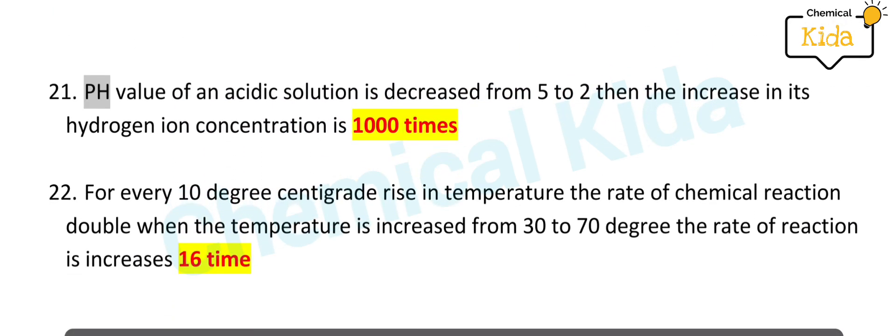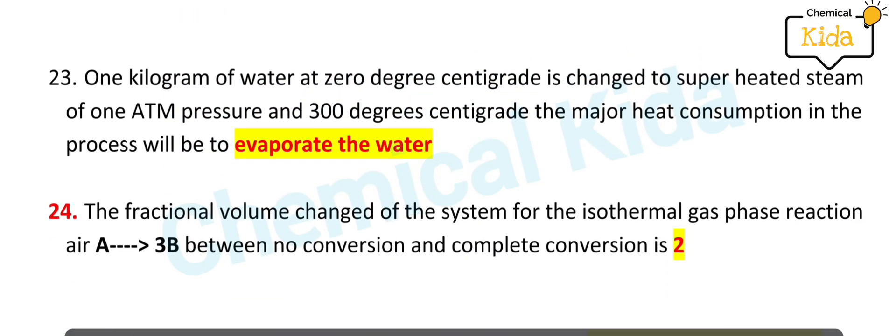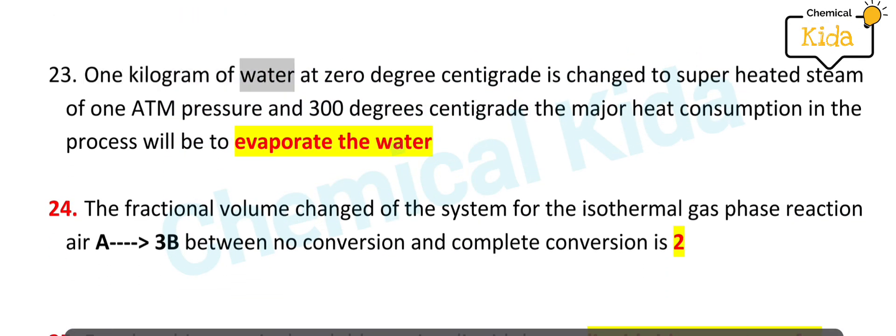pH value of an acidic solution is decreased from 5 to 2, then the increase in its hydrogen ion concentration is 1000 times. For every 10 degree centigrade increase in temperature, the rate of chemical reaction doubles. When temperature is increased from 30 to 70 degrees, the rate of reaction increases 16 times.